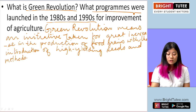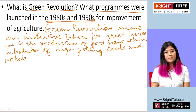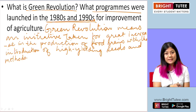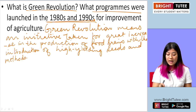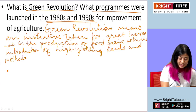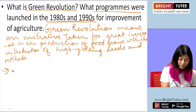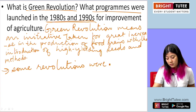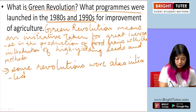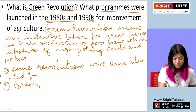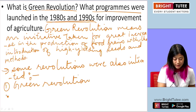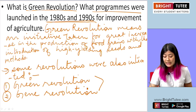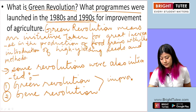The second part of the question — what programs were launched in the 1980s and 1990s for the improvement of agriculture — has already been addressed in the previous section, Topic 7. Apart from that, you can add that some revolutions were also initiated: number one, the Green Revolution, and number two, the Gene Revolution. The main aim for these was to improve agriculture.